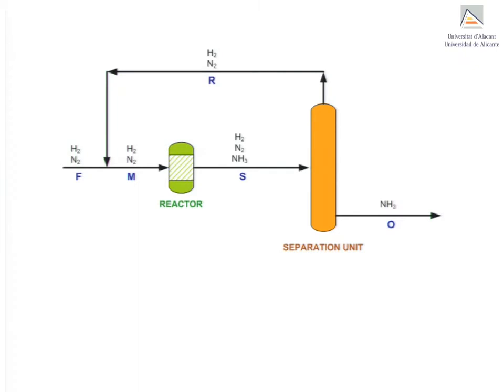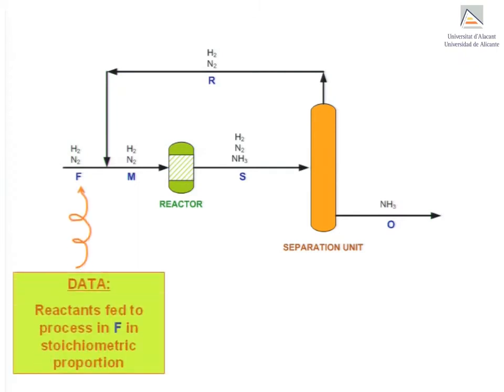We see that stream F still supplies nitrogen and hydrogen to the process in stoichiometric proportion. The separation unit sends all the ammonia in stream S to stream O. Stream R contains only nitrogen and hydrogen that are obviously in stoichiometric proportion.